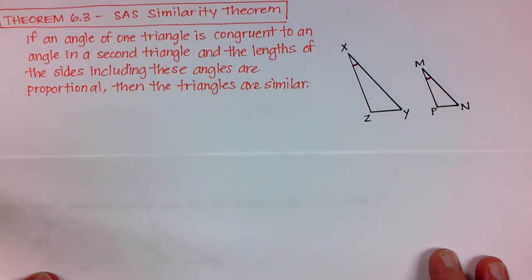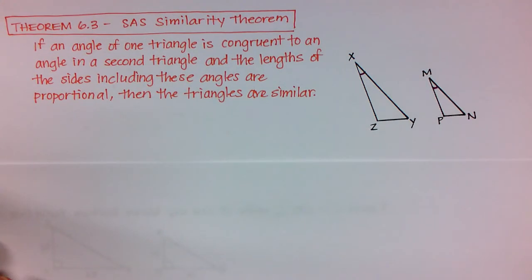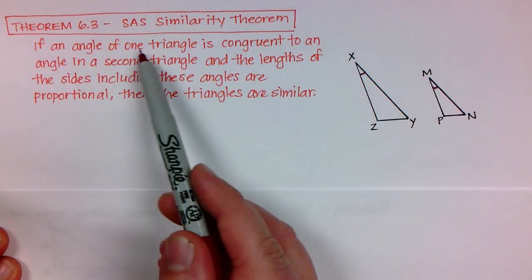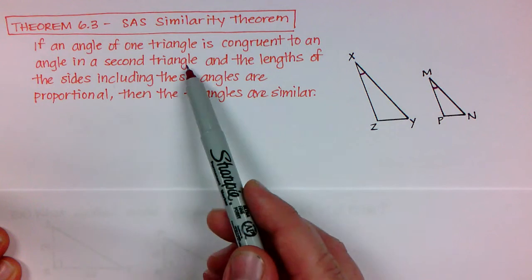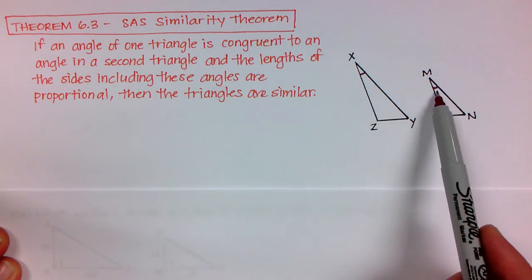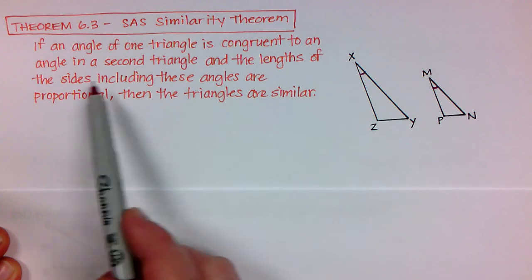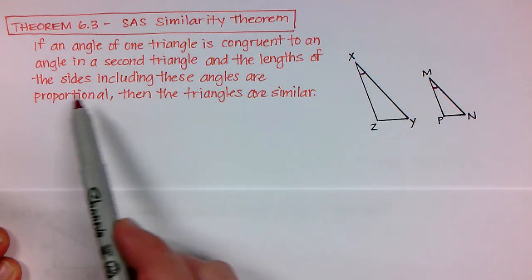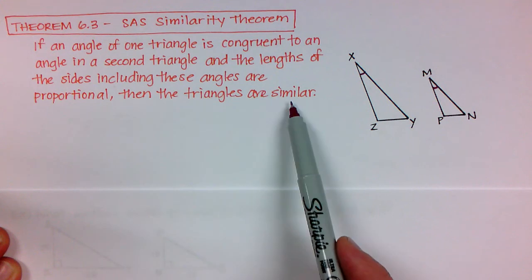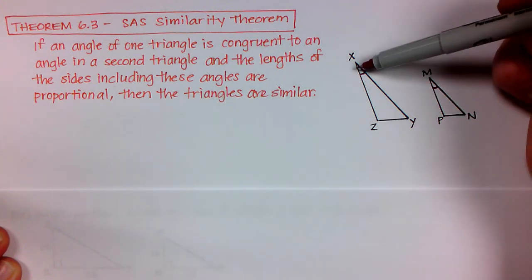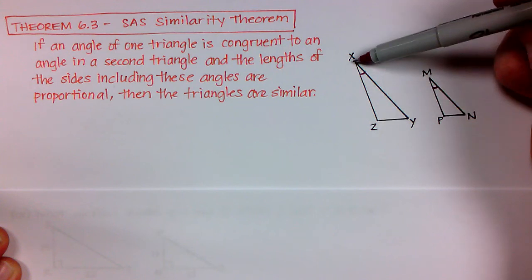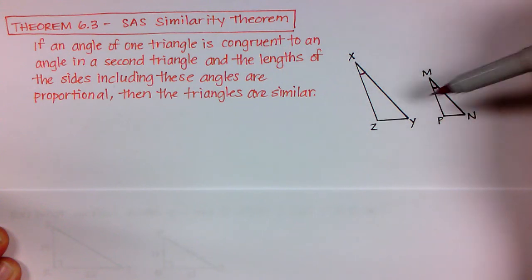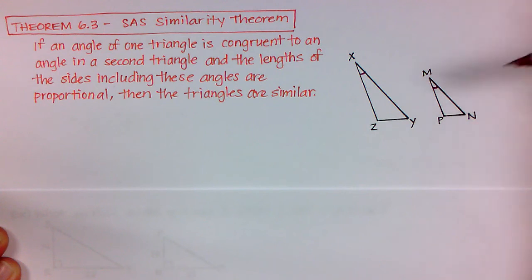We have a new theorem. This one is side angle side and it's another similarity theorem not to be confused with the side angle side congruence theorem. And what this one says is that if an angle of one triangle is congruent to an angle in a second triangle. So I have that right here that X and M are congruent. And if the lengths of the sides including these angles are proportional then the triangles are similar. So it's only talking about two sides and it's talking about the sides that make up that angle. So this would be XZ and XY and also MP and MN. If those are proportional then the two triangles are congruent.